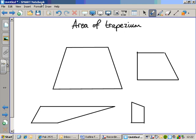These are all different kinds of trapezia. What is it about a trapezium that makes it a trapezium? Well, first of all, all trapezia have four sides.